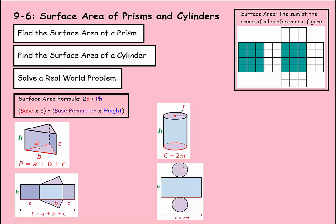The perimeter is A plus B plus C, which if you unfolded this prism would be A plus B plus C. If you multiply that times the height, it looks like a rectangle, so that would be the surface area of all three faces. So: 2 times the base plus the perimeter times the height.